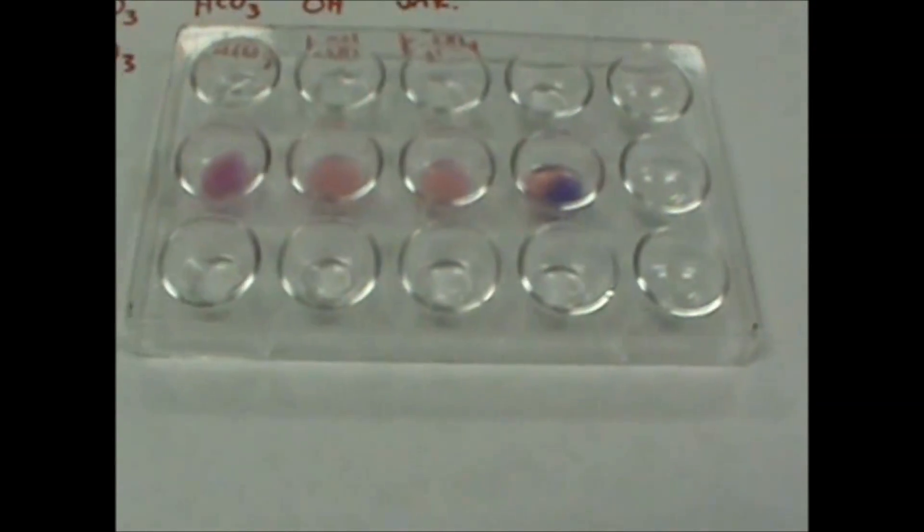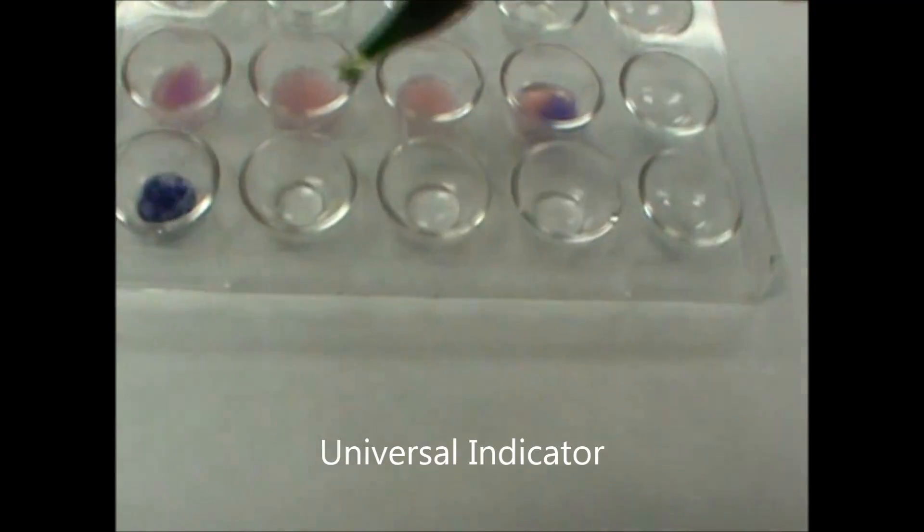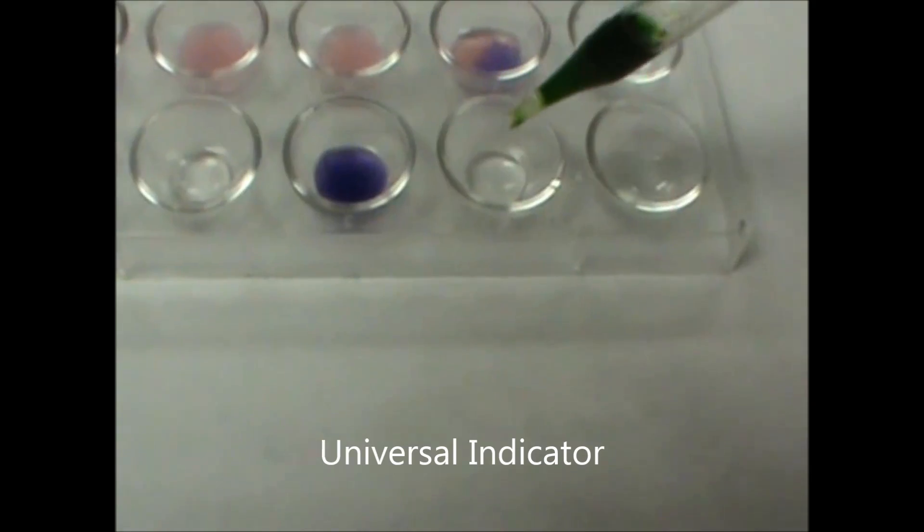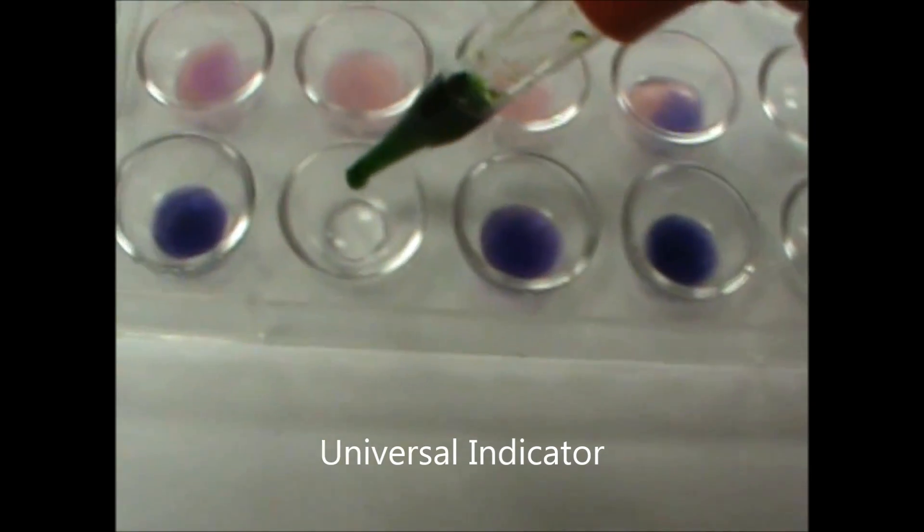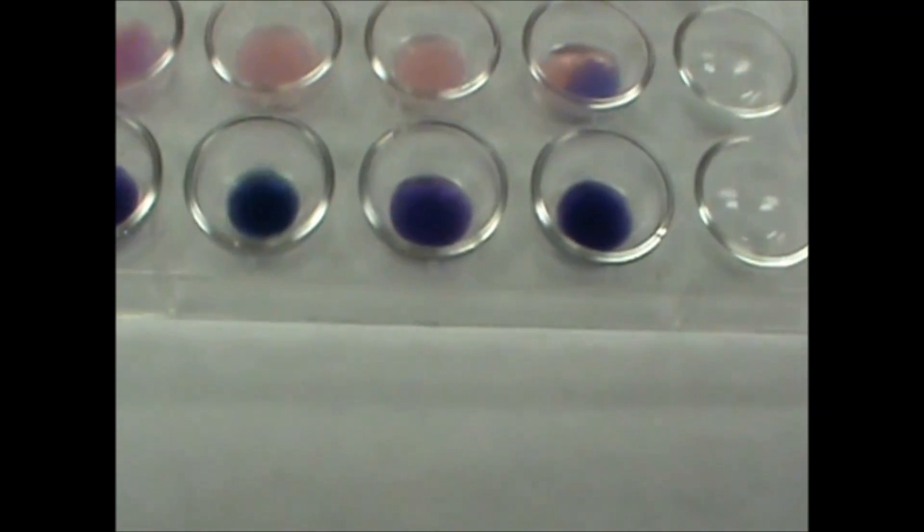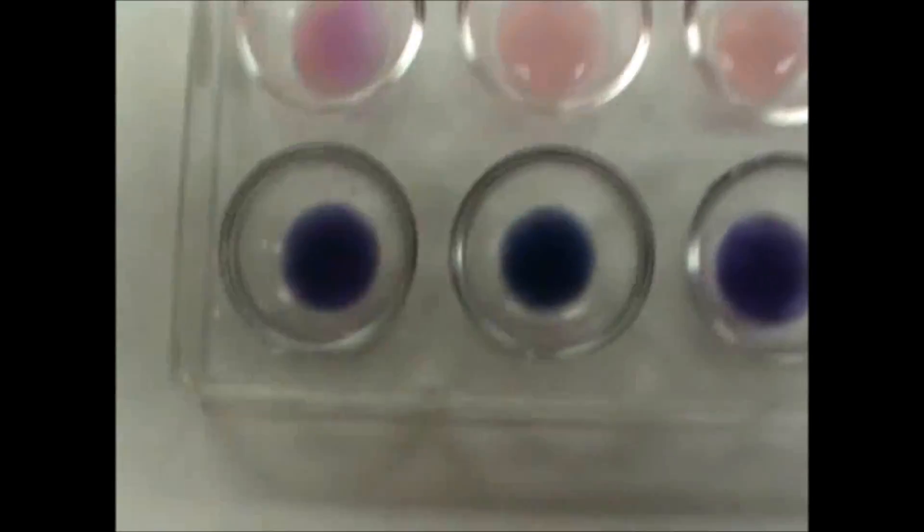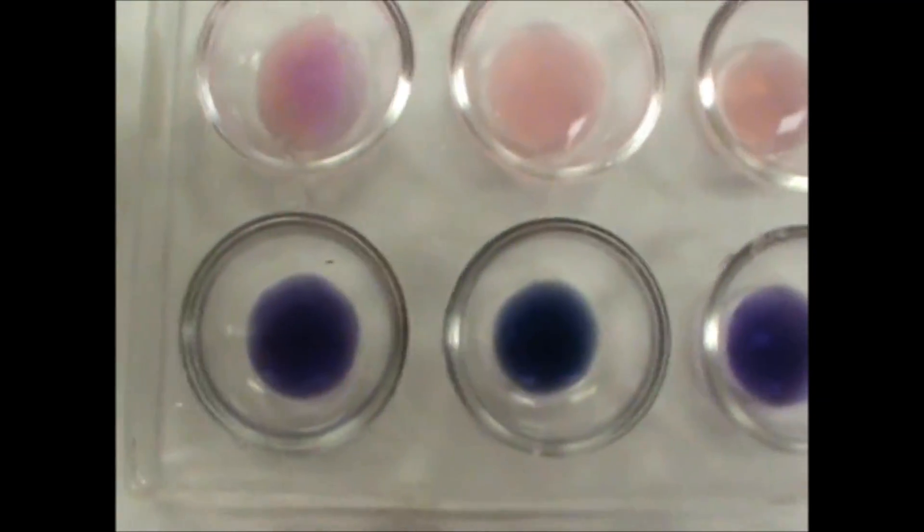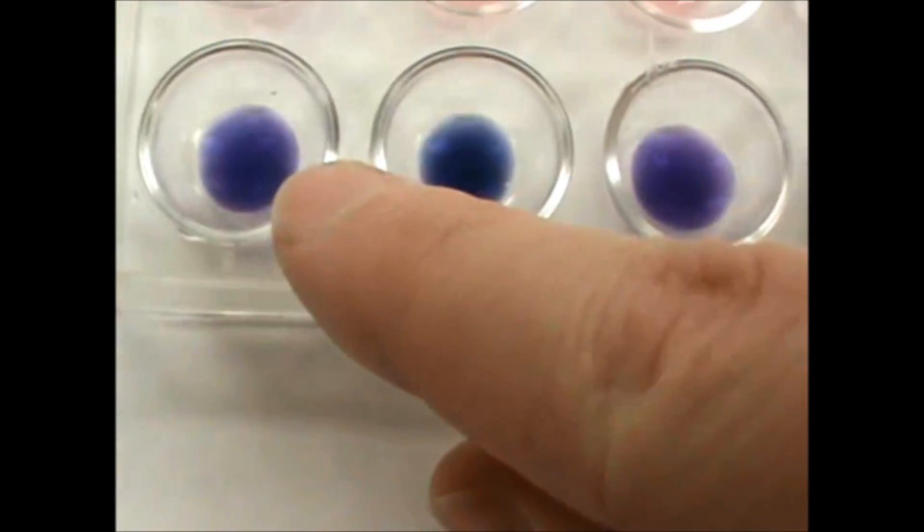After that you can add universal indicator. Now the bases will turn purple, but there's a chance that sometimes the bicarbonate will turn more blue than purple. So it's hard to see, but this is more of a bluish hue to this one than there is to this one which is purple.